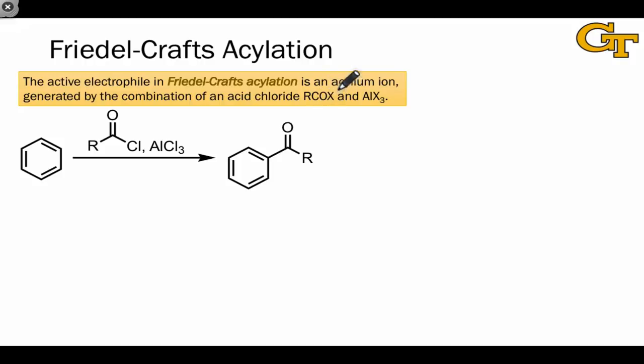In Friedel-Crafts acylation, the active electrophile is a resonance stabilized cation called an acylium ion with a general structure like this, with an R group connected to a cationic carbon sharing positive charge with an oxygen doubly bound to it.